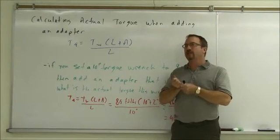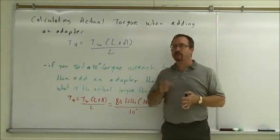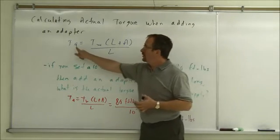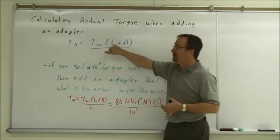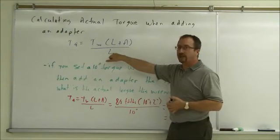So despite the setting on the wrench, how much force am I really applying when I add an extension or an adapter onto it? So that's what this particular equation is about. So the actual torque is equal to the torque setting on the wrench times the length of the wrench plus the adapter length divided by the length of the wrench.